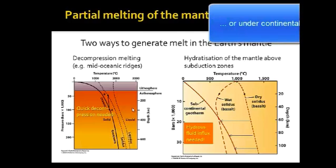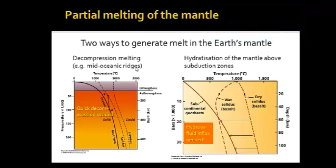Here are the two diagrams relating to the two processes. Decompression melting below mid-oceanic ridges transports mantle material sitting on the oceanic or continental geotherm. If we achieve decompression melting, we uplift hot material without cooling it, which may bring mantle material physically to a position where it is hotter than the normal geotherm and lies at or beyond the solidus, producing partial melting.